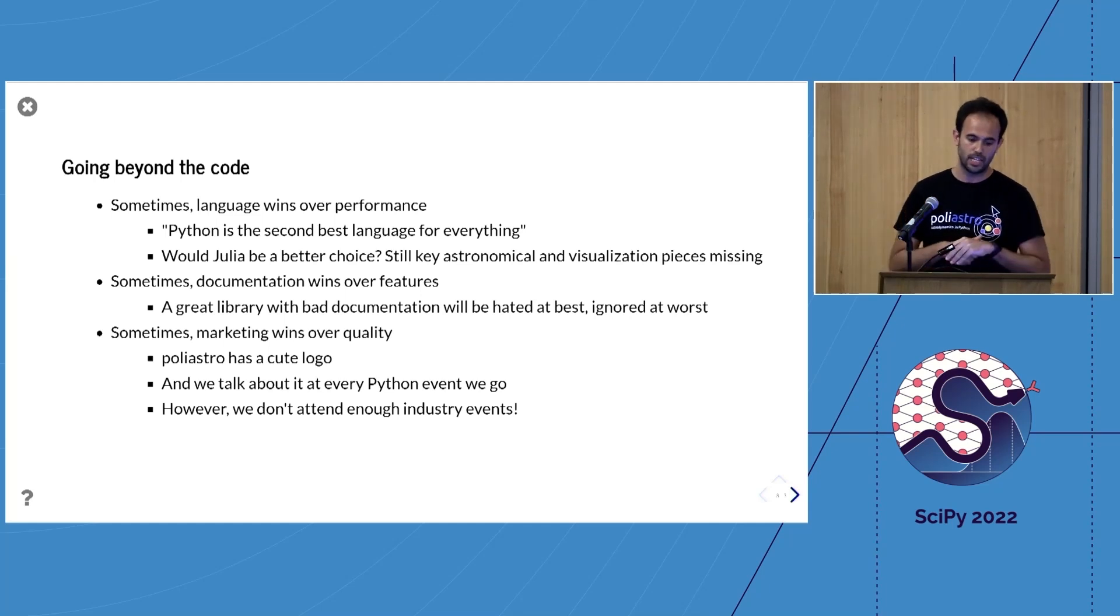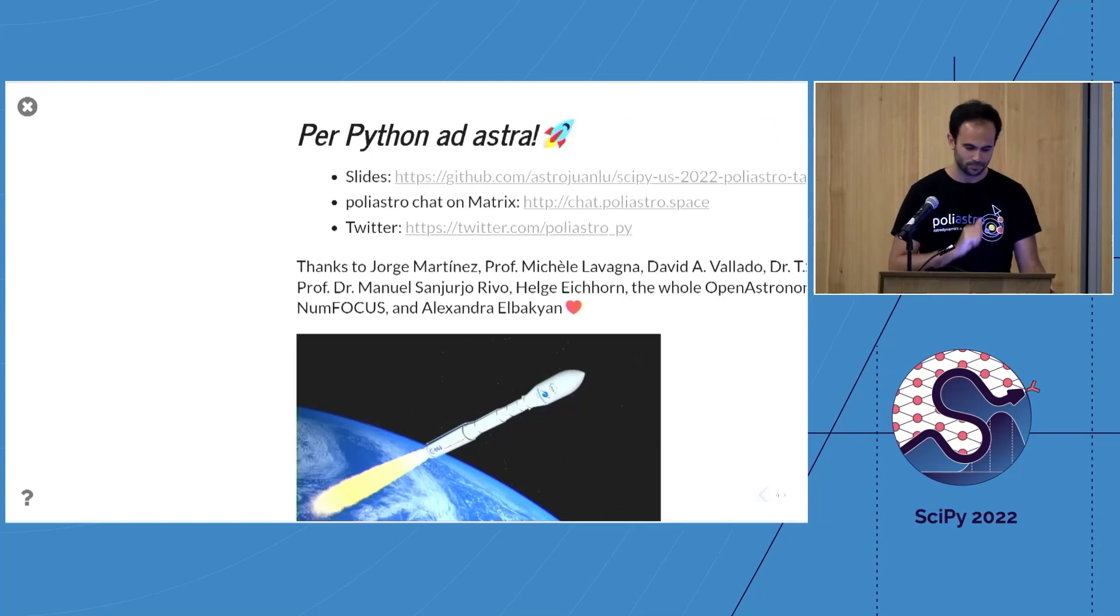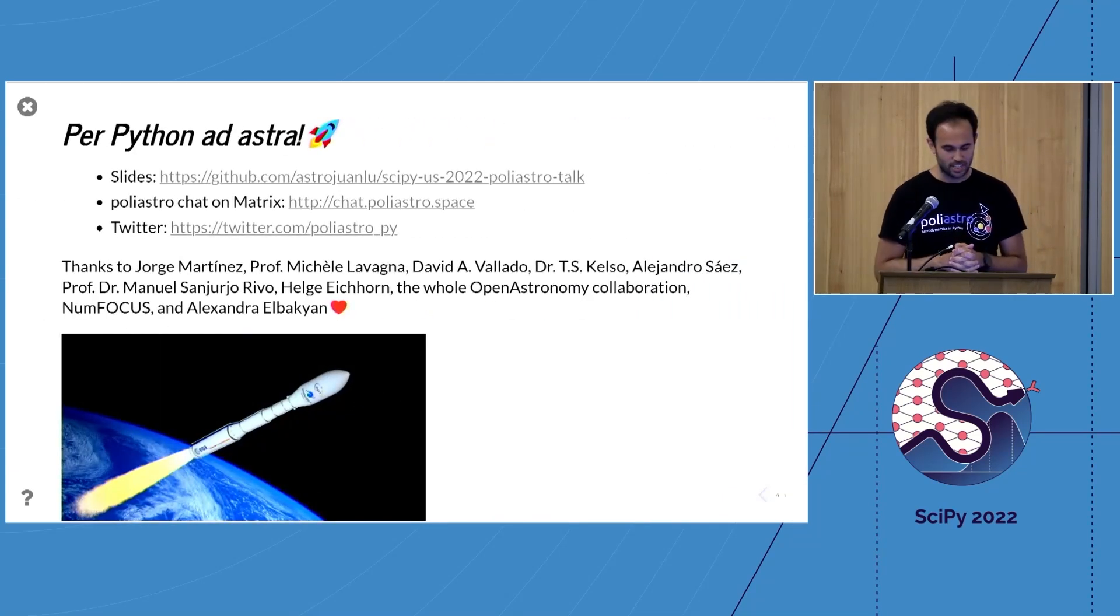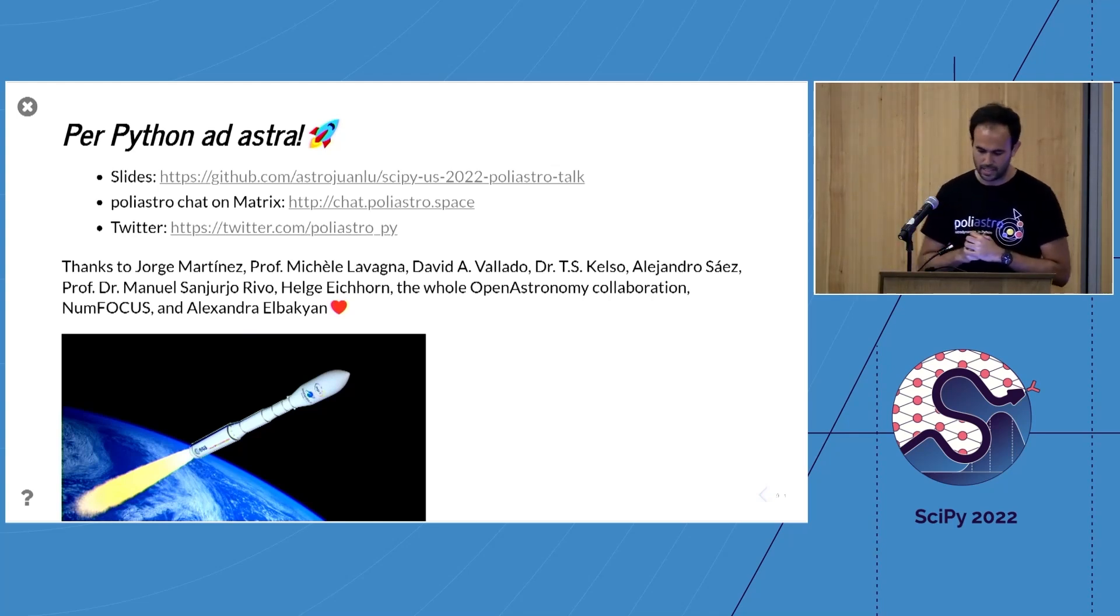Finally, I believe that sometimes the things that set a project apart are things that go beyond the code. Python, as you saw, is not the fastest language in the West, but it's very popular, and this has helped PolyAstro indirectly. Having a library that is documented is much better than having a great library that is not documented, because documentation is what people experience from your library. Having a cute logo and speaking at conferences also helps the success of projects, and this has nothing to do with the code itself. Thank you very much for your patience. All the slides are online. You can join the community. I would like to thank all these people that contributed to the project, and I'll be happy to take questions.